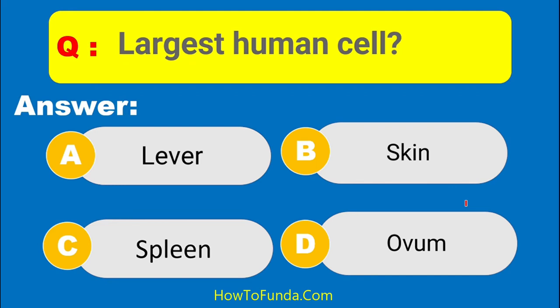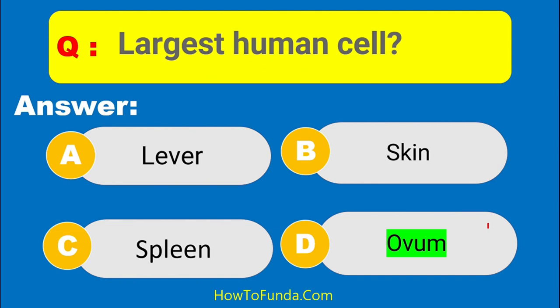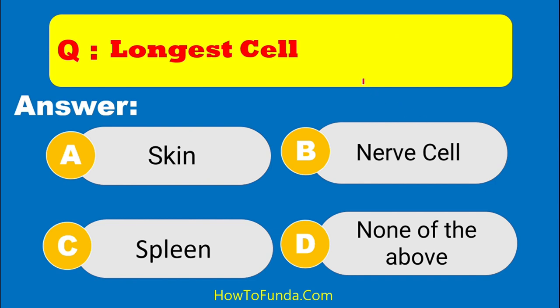Which is the largest human cell? The right answer is ovum — ovum is the largest human cell. Which is the longest cell? Is it skin, nerve cell, spleen, or none of the above?